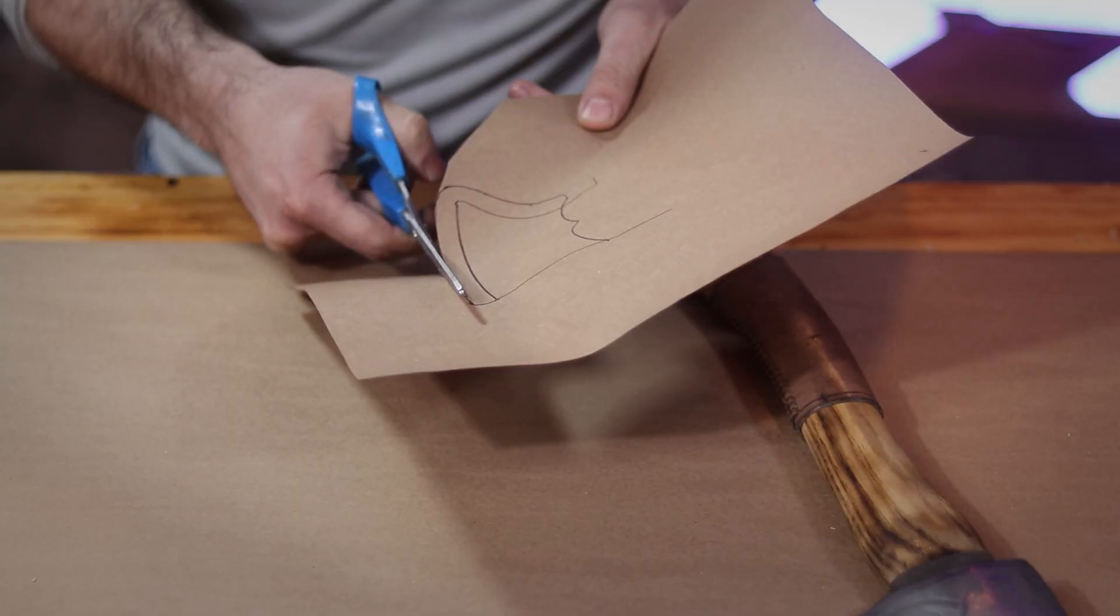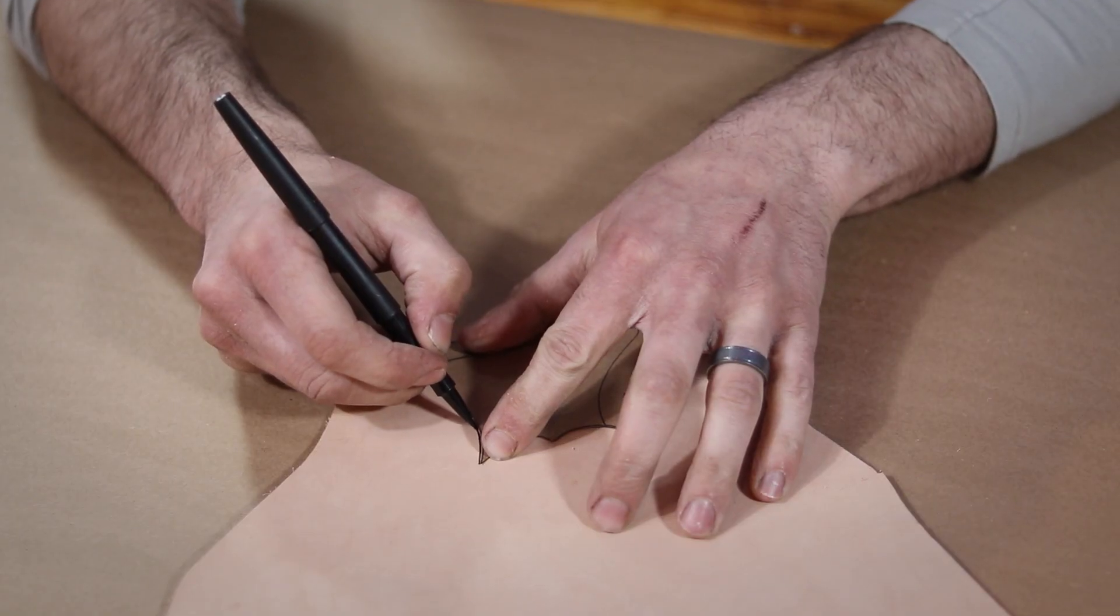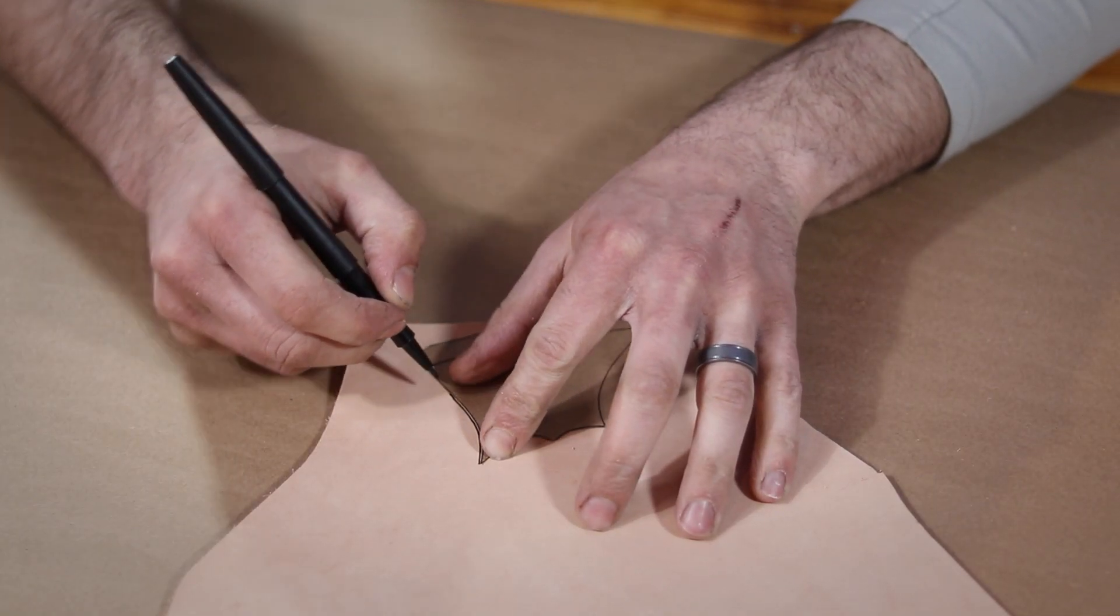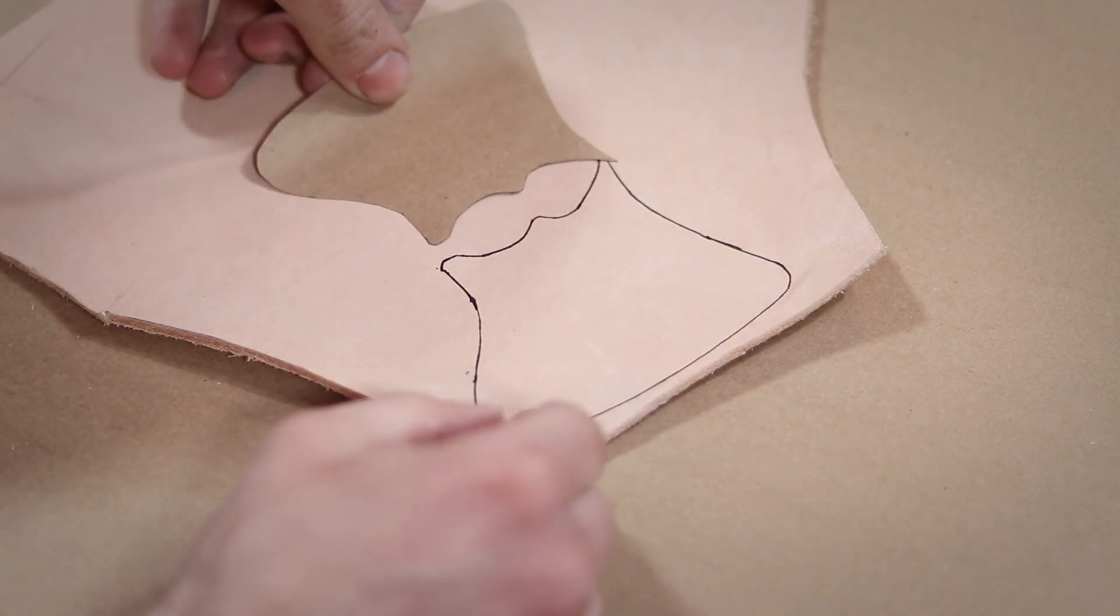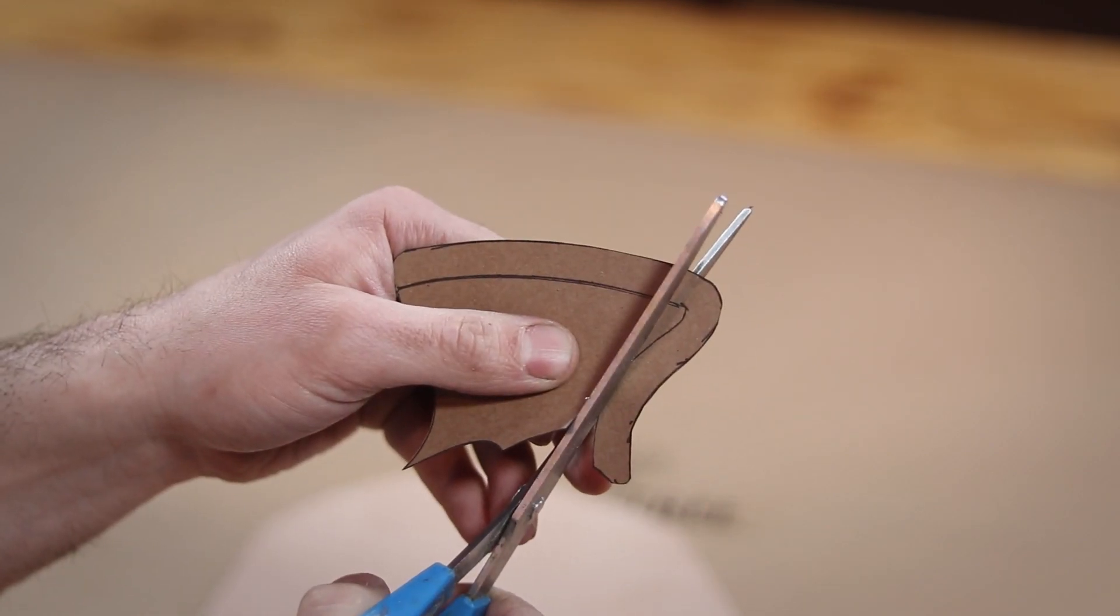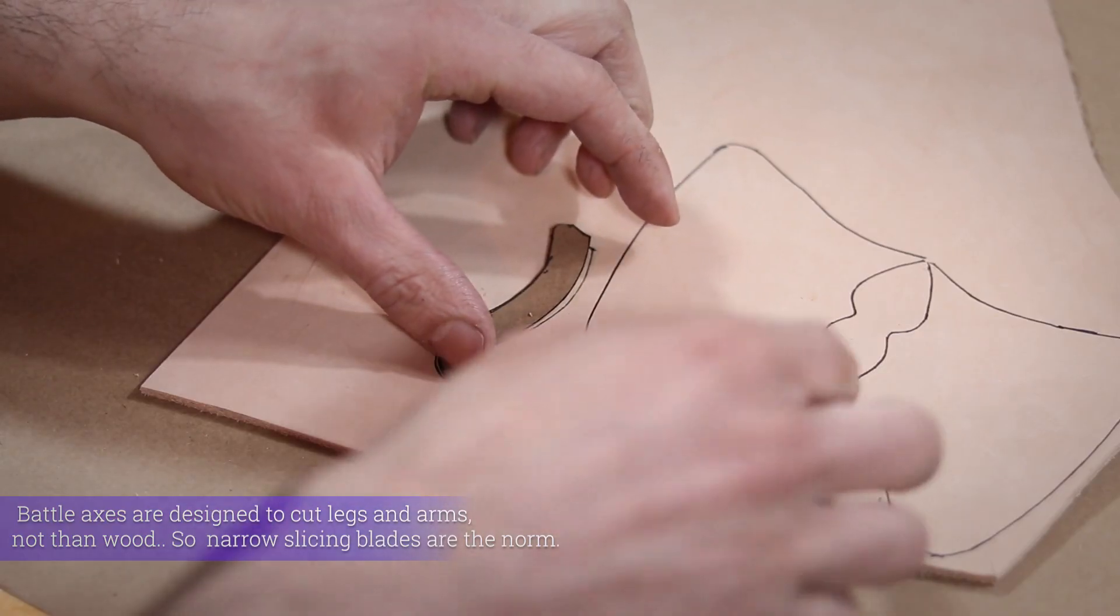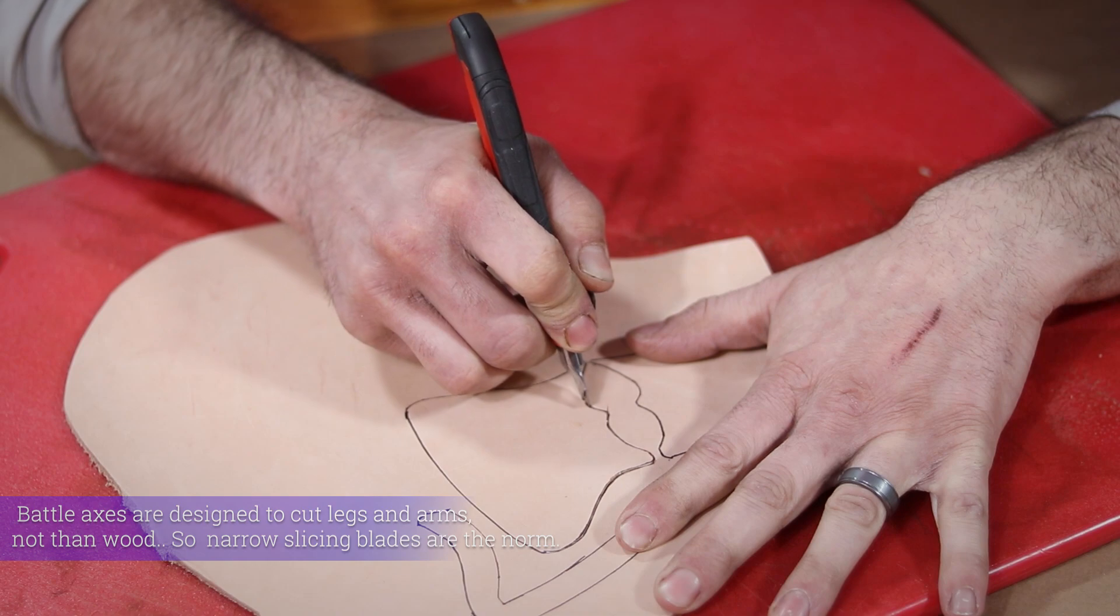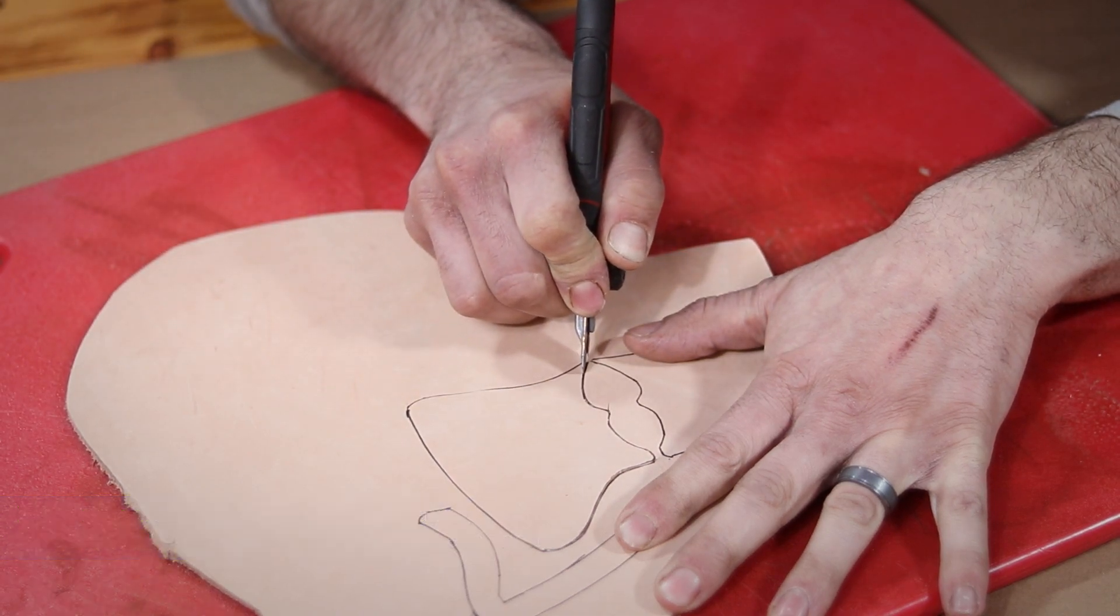With that whole design established, I go ahead and cut the pattern out. I trace that pattern onto my leather in one direction and then flip it over so I have it going in the other direction as well. I'm also going to need my welt in leather too, so I cut that out of the pattern and lay it down on the leather as well. Then I carefully cut everything out with a sharp knife.